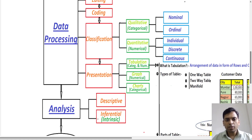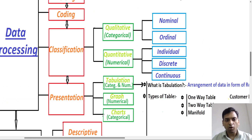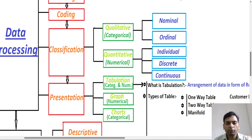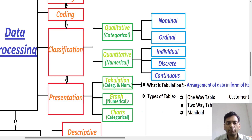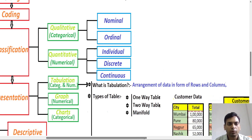Data presentation has three forms: first is tabulation (tabular form), second is graphs, and third is charts. In graphs we use numerical data — quantitative data — like individual, discrete, and continuous. In charts we use categorical data, which means qualitative data, including nominal and ordinal types. In tabulation we can use both categorical and numerical data.